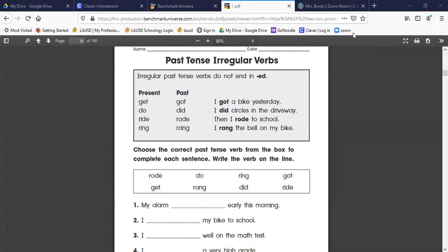In the box it has some examples. These are the present tense: get - and yesterday I got; do - yesterday I did; ride - yesterday I rode; ring - yesterday I rang. As they said in one of the videos, a lot of times they just change the vowel, not always, but a lot of times. And that's what we're seeing here.